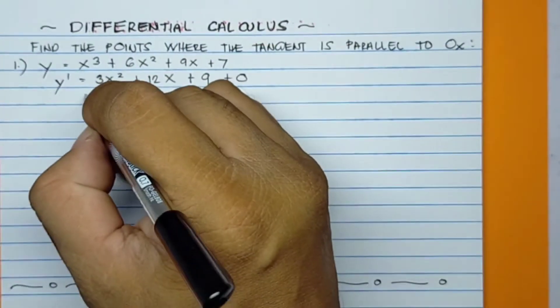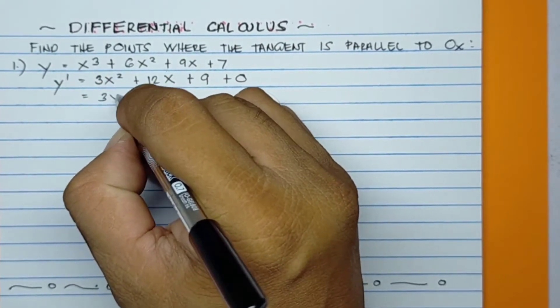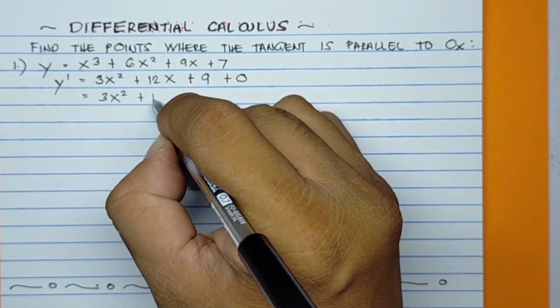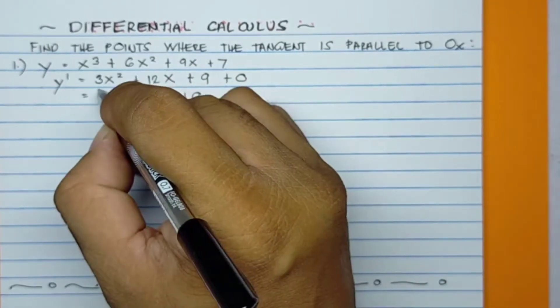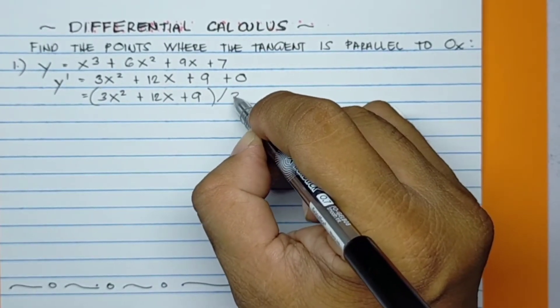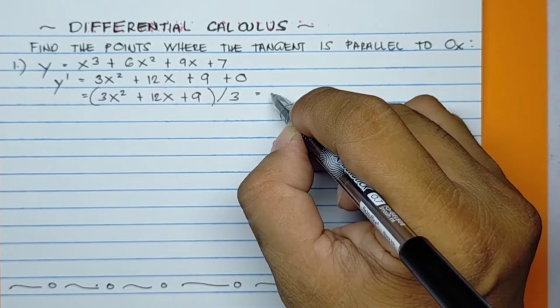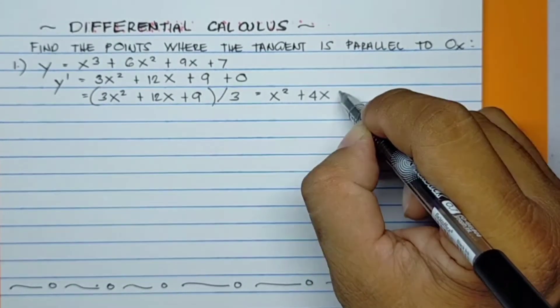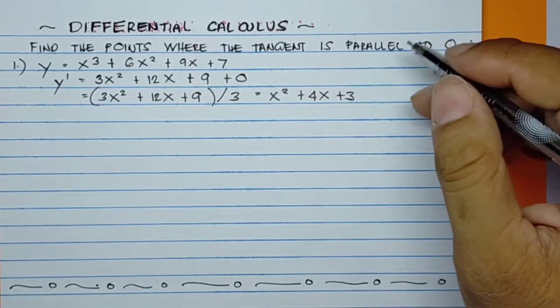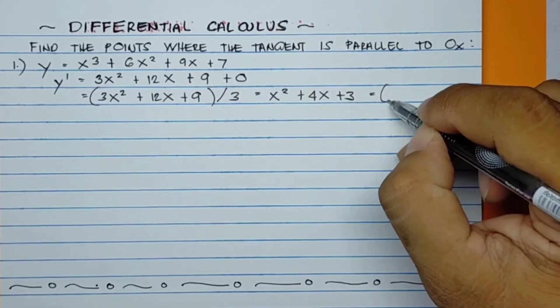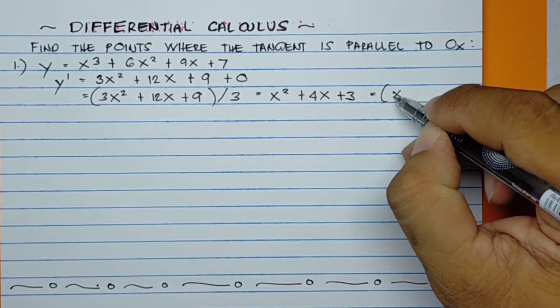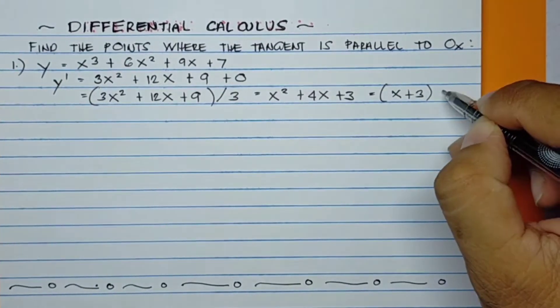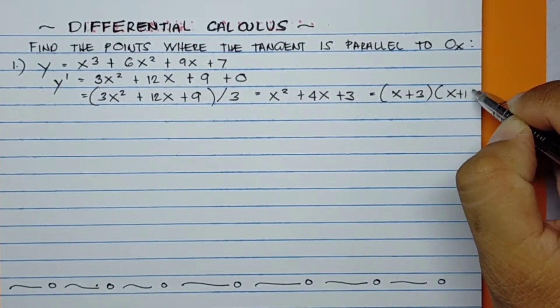So the result will be 3x² + 12x + 9. We have a common factor of 3, so divide by 3. The result will be x² + 4x + 3. Now factor this out: that will be (x + 3)(x + 1).